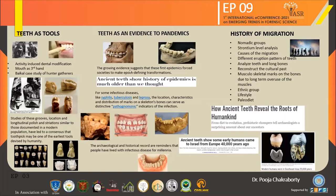The growing evidence suggests that first epidemics forced societies to make epoch-defining transformations. For some infections like syphilis, TB, and leprosy, the marks on a skeleton's bones and teeth can serve as pathognomonic indicators of an infection. Some diseases will never affect the skeleton at all, including plague and viral infections like HIV. With this pandemic, it won't be surprising if it starts showing some effects on skeletal parts too, as there have been case reports of the virus affecting alveolar bones.